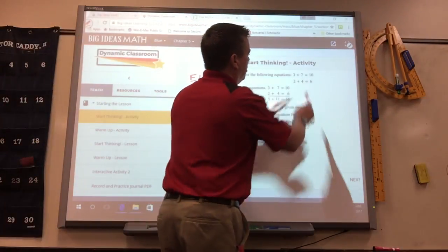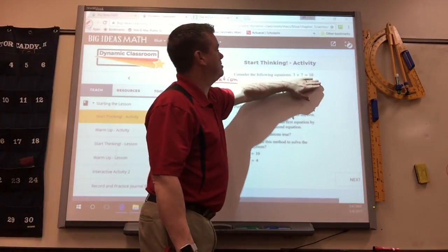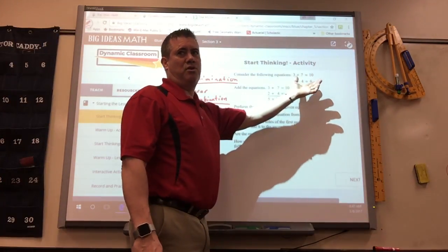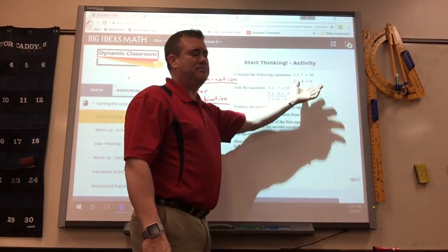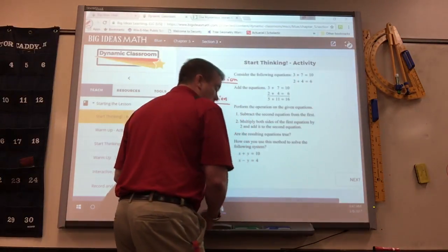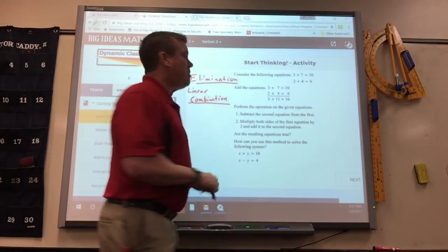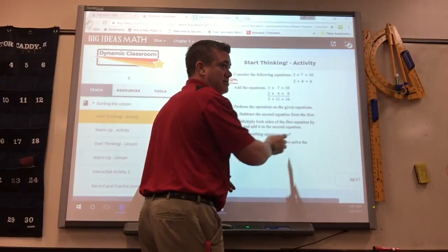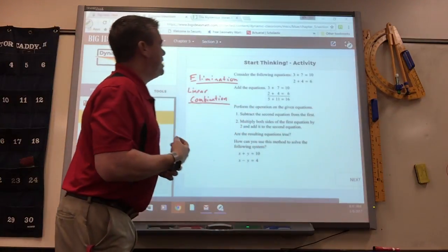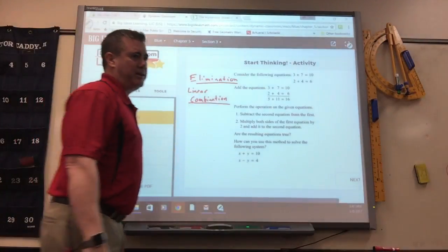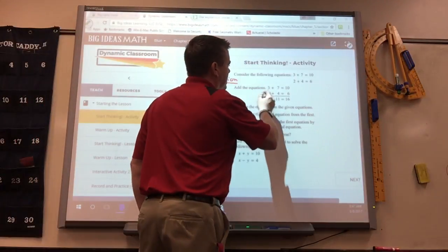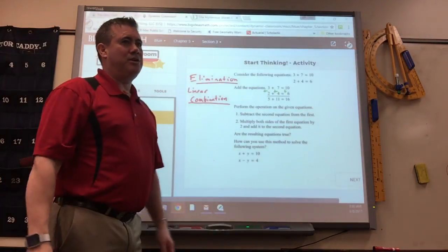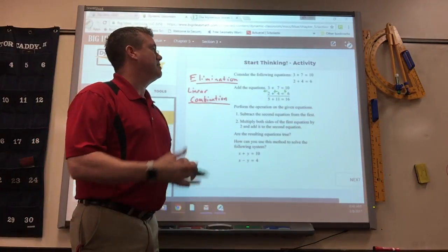Here they have just plain old 3 plus 7 is 10. 2 plus 4 is 6. Those are actual equations, it's just there's no variables in them. So if you lined them up, now this is the key when you do elimination. You got to line them up. So these are in line, these are in line, the equal signs are in line. And then this is where they get combination from, linear combination, is if you add that you get 5 and whatever you do to one you got to do to the other. You can add or subtract.